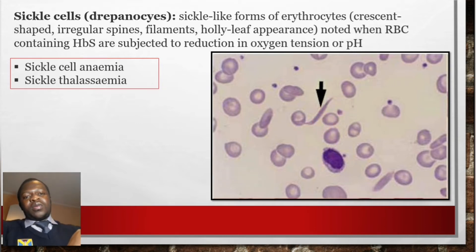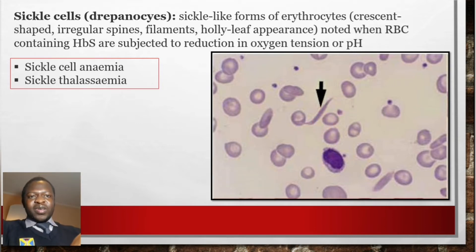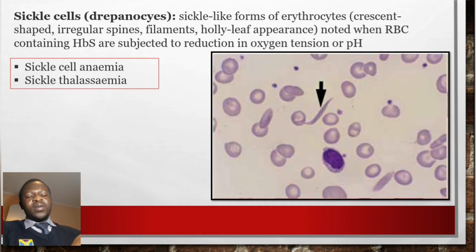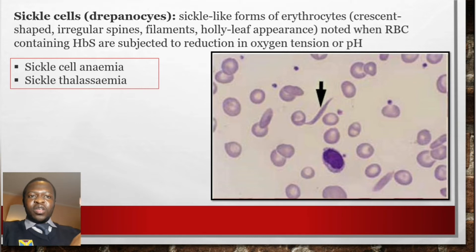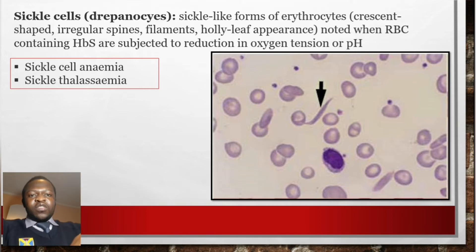In simple terms, in sickle cell anemia you find sickle-shaped erythrocytes that take this shape when they are subjected to a reduction in oxygen tension or pH.